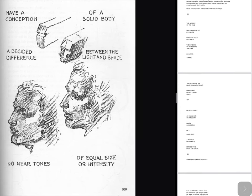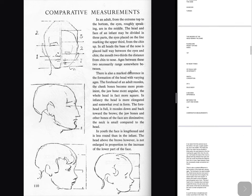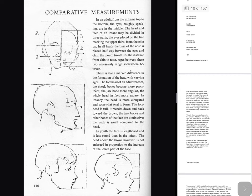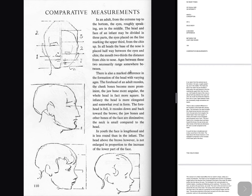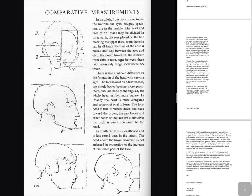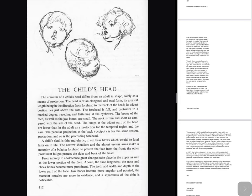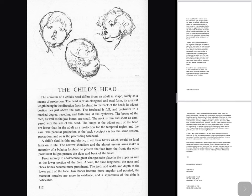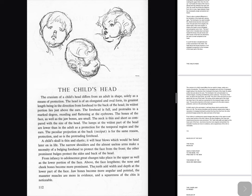Comparative measurements: In an adult, from the extreme top to the bottom, the eyes roughly speaking are in the middle. The head and face of an infant may be divided in three parts, the eyes placed on the line marking the upper third from the chin up. In all heads the base of the nose is placed halfway between the eyes and chin; the mouth two-thirds the distance from chin to nose. There is also a marked difference in the formation of the head with varying ages. The forehead of an adult recedes, the cheek bones become more prominent, the jaw bone more angular, the whole head in fact more square. In infancy the head is more elongated and somewhat oval in form. The forehead is full, it recedes down and back toward the brows, the jaw bones and other bones of the face are diminutive, the neck is small compared to the head. In youth the face is lengthened and is less round than in the infant. The child's cranium differs from an adult in shape solely as a means of protection. The head is of an elongated and oval form, its greatest length being in the direction from forehead to the back of the head, its widest portion lies just above the ears. The forehead is full.